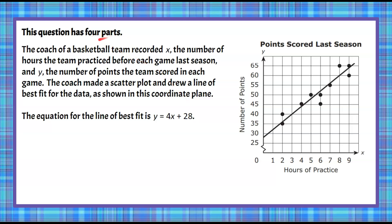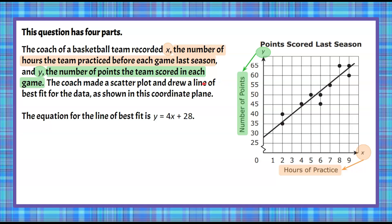Before we begin the four-part question, let's make sure we understand our scatterplot. The coach recorded X, the number of hours the team practiced before each game — that's our X-axis, representing hours of practice. Then Y is shown on our Y-axis, representing the number of points the team scored in each game. The scatterplot shows the relationship between hours of practice and points scored.